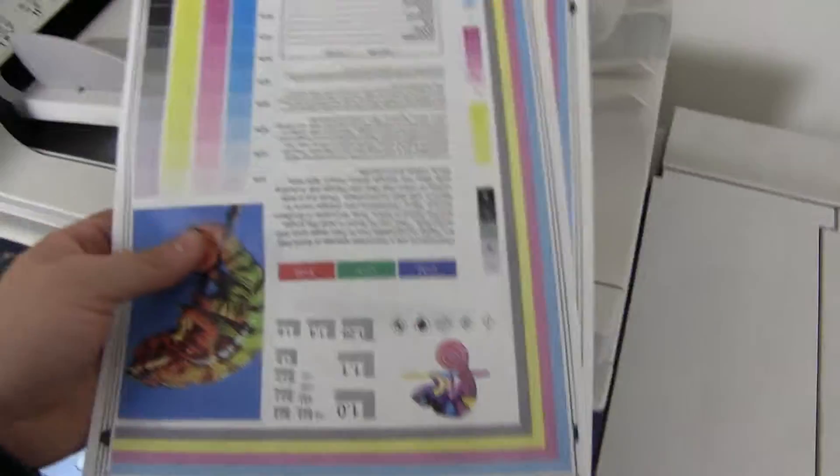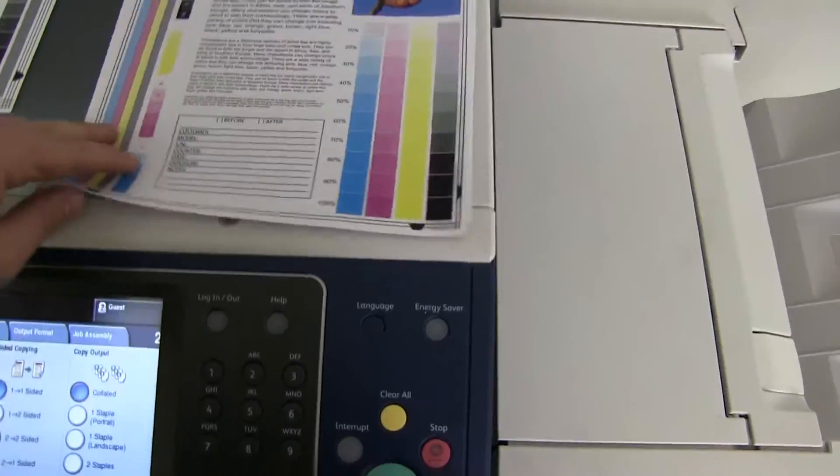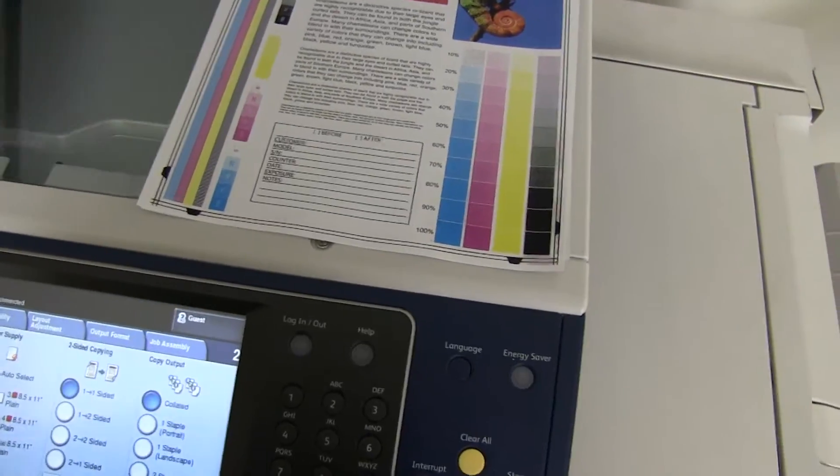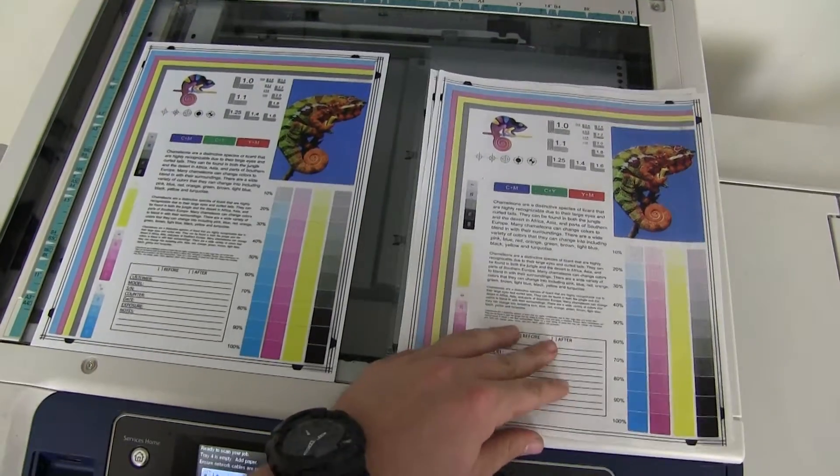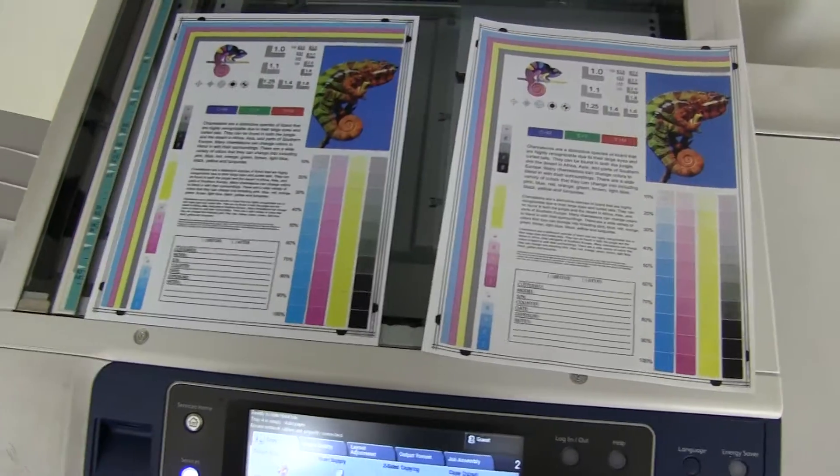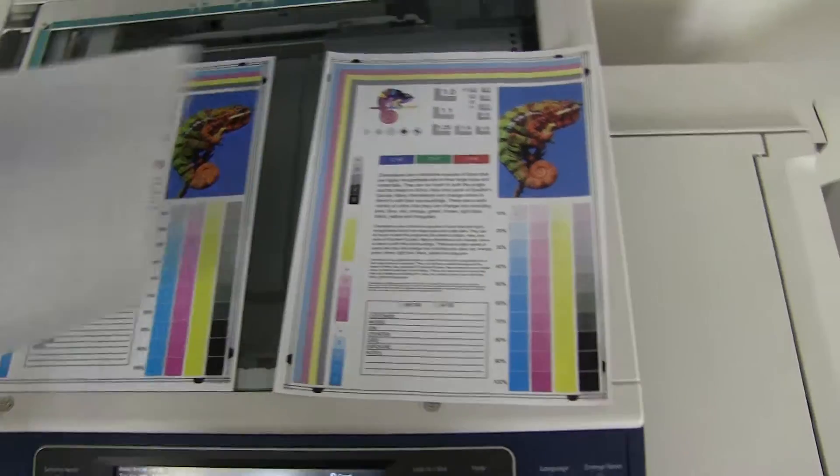And here we have our test copies. We'll go ahead and place them on the glass next to our chart. And as you can see here from our test copies to the right and our test chart to the left, very good color image on this machine.